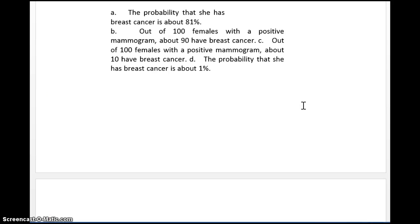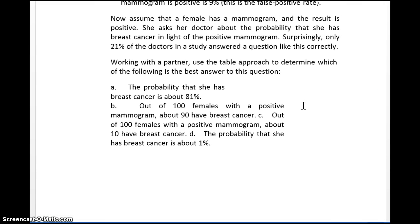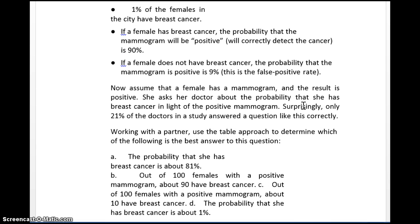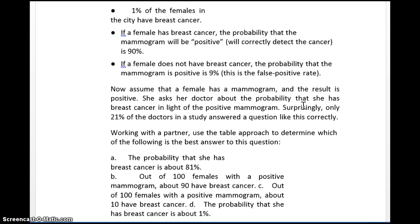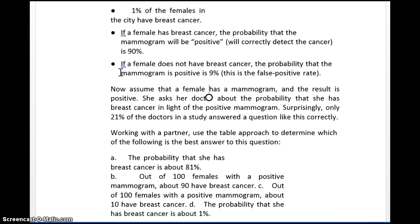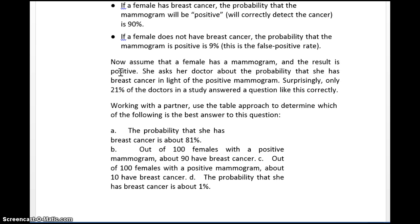So the probability she has breast cancer is about 1 out of 11, roughly 9%. Looking at the answer choices, out of 100 females with a positive mammogram, about 10 have breast cancer. The answer is C.